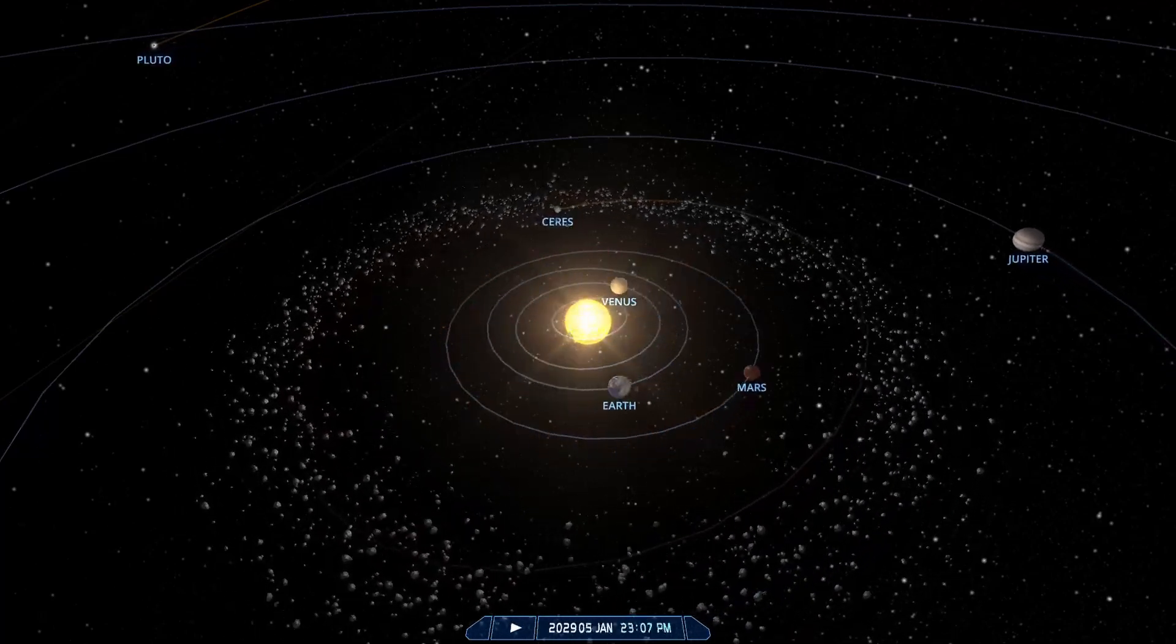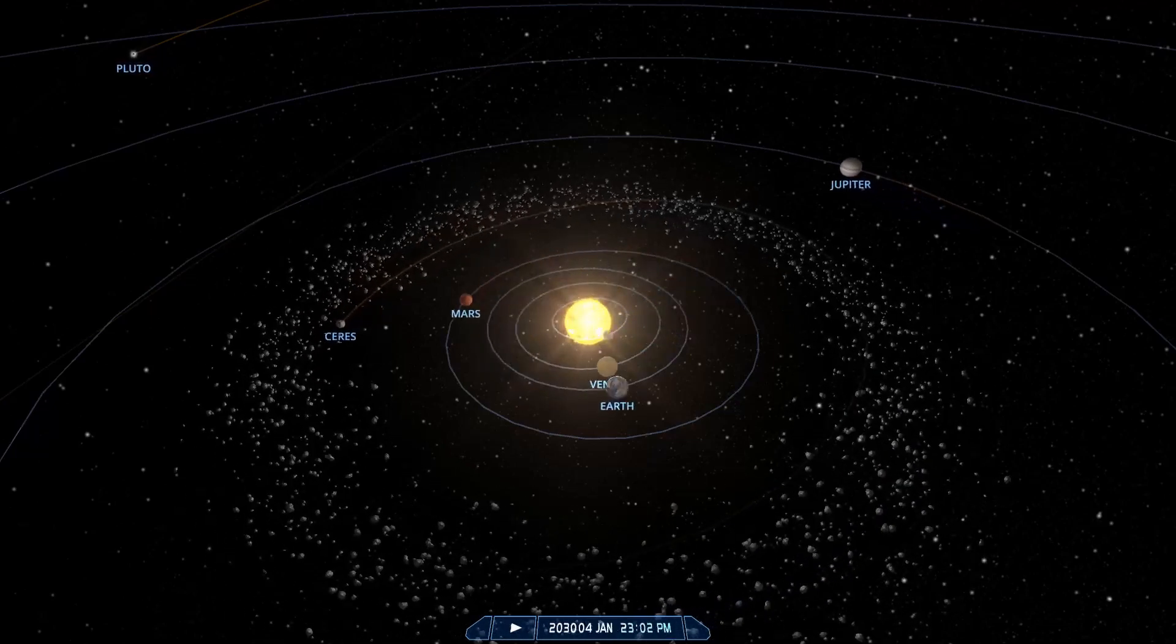If quasars are birthed out of galaxies and they show this quantization does a similar process happen with planets? Instead of them forming through an accretion process does this start to show how this may in fact be another example of a birthing process?